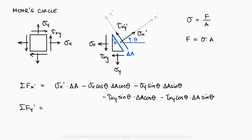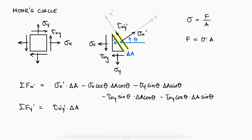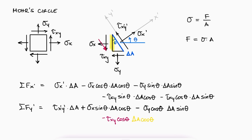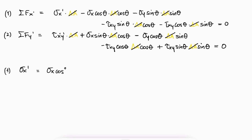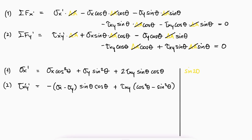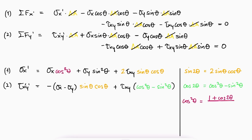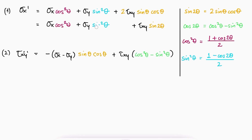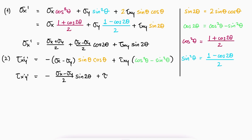For the sum of forces in the y prime direction, we have τx prime y prime affecting the hypotenuse, the y prime component of σx which is positive and affects the left side of the triangle, the y component of σy which is negative and affects the bottom side of the triangle, and the components of τxy on the left side and the bottom side. Since the stress element is only deforming and not moving, the sum of forces equals zero, and since every term has a ΔA, ΔA cancels out and we can write simplified versions of each equation. Using trig identities for the double angle and for cosine squared and sine squared, we can group terms together for the expressions of both σx prime and τx prime y prime.